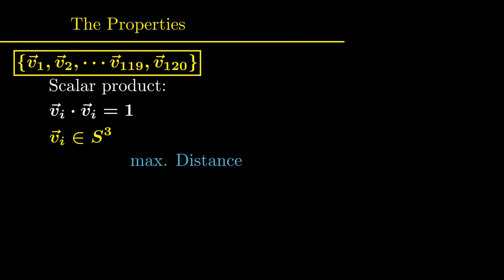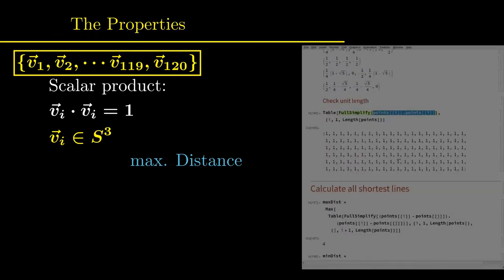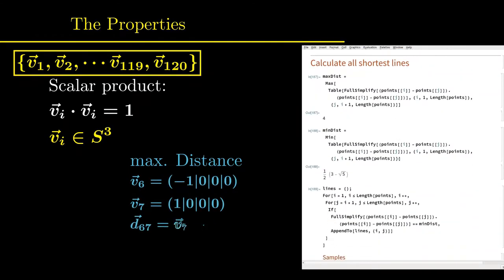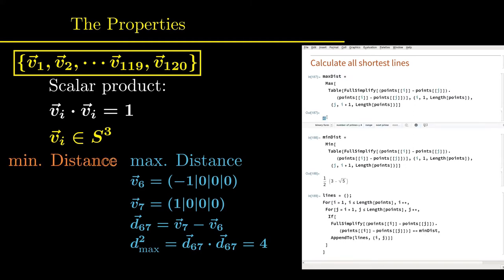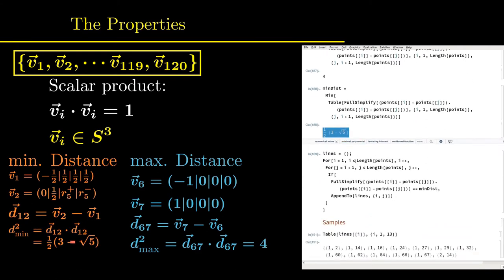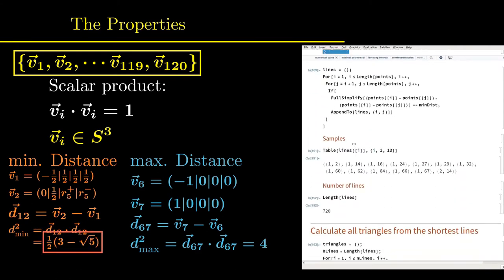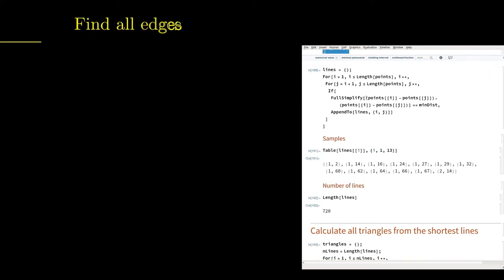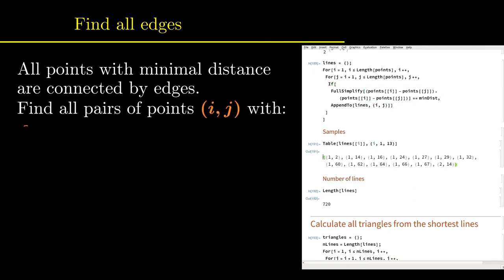On this sphere, some pairs of points are closer to each other than other pairs. It is easy to measure the distance between all these points and the largest and the shortest distance between any two points can be determined. The largest distance, of course, corresponds to antipodal points that have a distance of two. All pairs of points with the shortest distance are now connected by edges and the edges are collected in a list. To find them, simply all possible pairs of points are tested. And it turns out that there are 720 of these shortest lines.